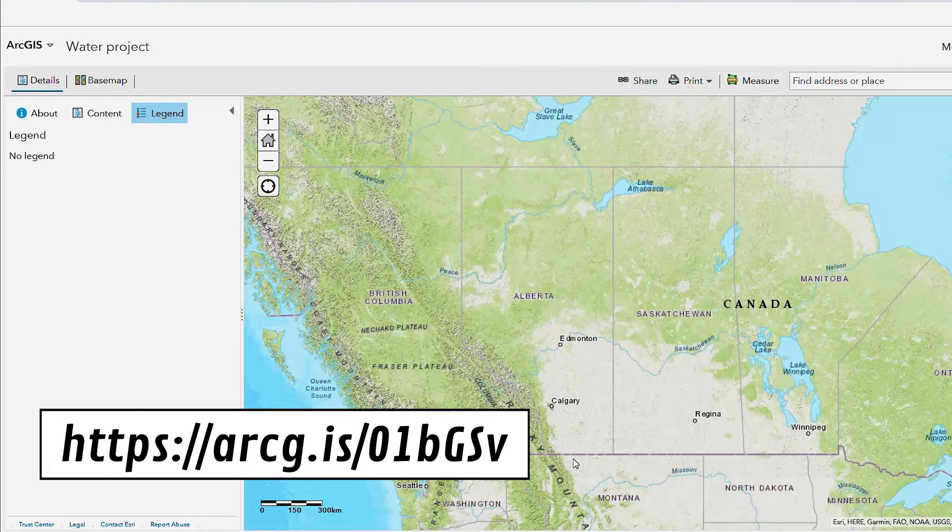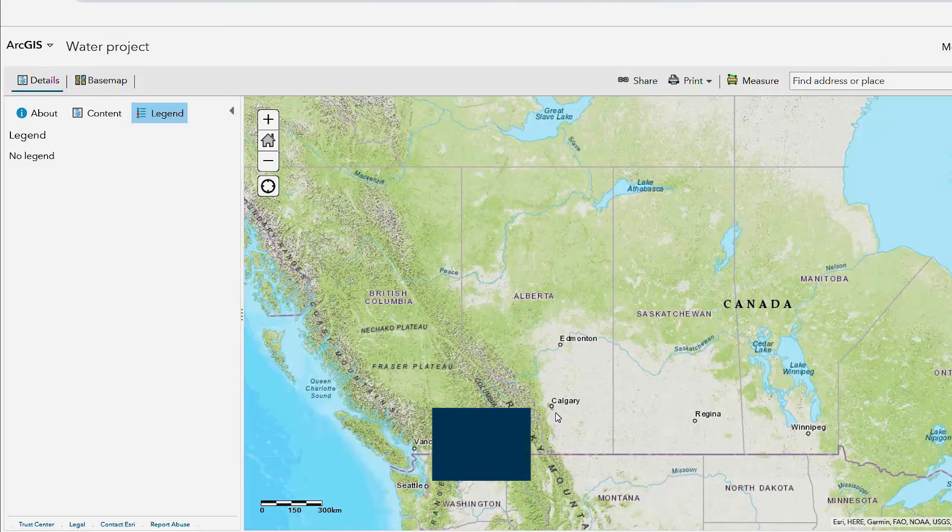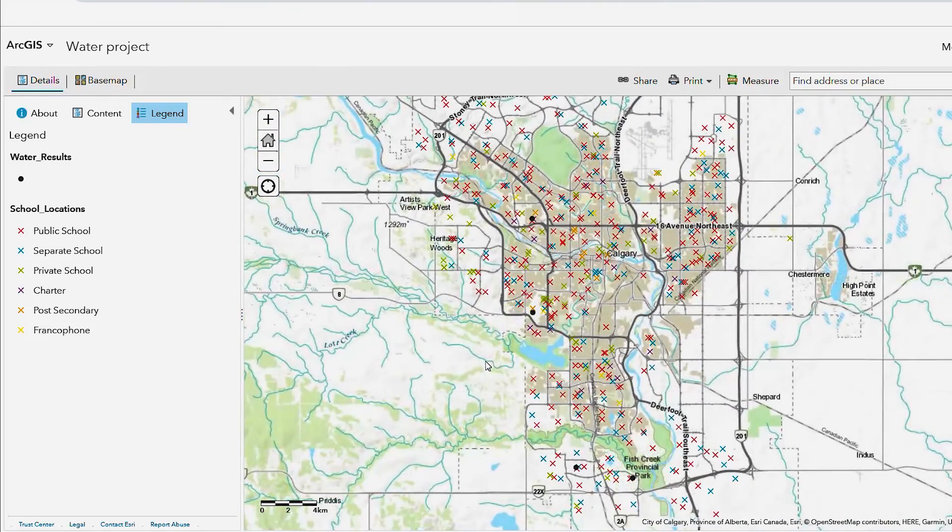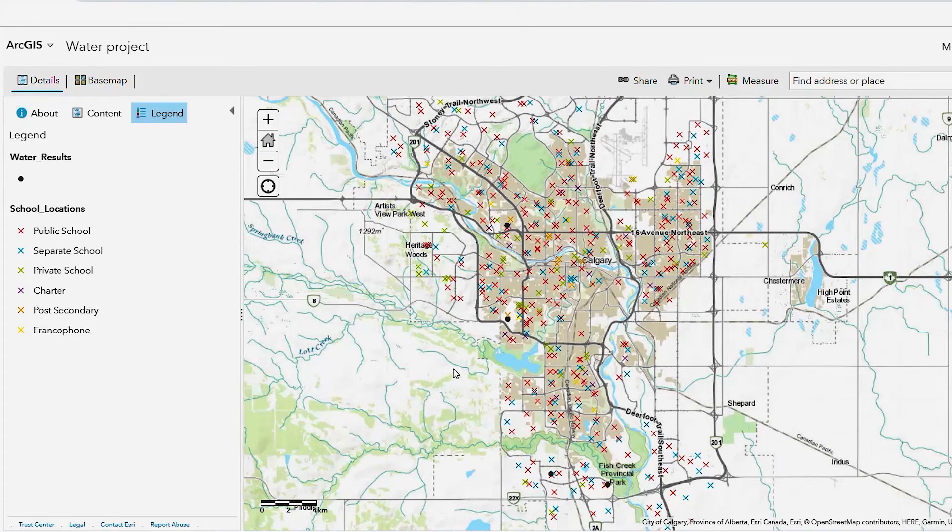The map you are looking at is the province of Alberta. Let's zoom in on the city of Calgary. The X's on the map depict all of the schools in Calgary. The different colors represent the type of school, for example, public, separate, private, charter, and so on.